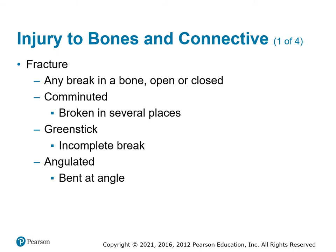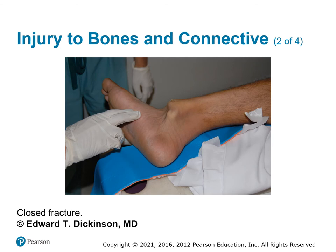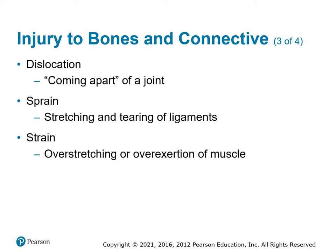A fracture is any break, whether it's open or closed. We've got a couple of different types: comminuted — broken in several places; then we've got a greenstick, which is more likely from a younger patient, where you get an incomplete break because the bone is still soft, so it looks like a branch of a tree that breaks but not completely all the way through. Then you've got angulated fractures, where you have an extra bend in the bone. If the injury is to the joint, it could be a dislocation where the two joint pieces come apart — that's usually associated with a tear of the ligaments. Or if you just stretch or partially tear ligaments, it's called a sprain. And if you overexert or stretch the muscles, you get a strain.